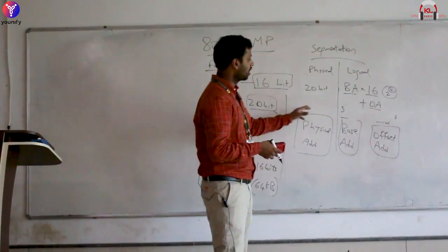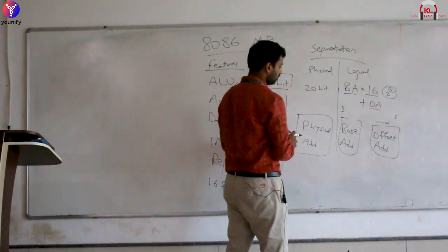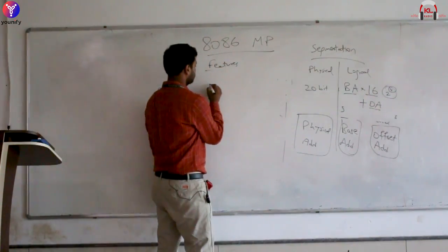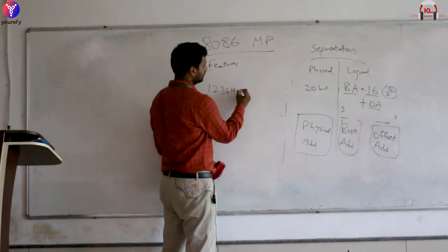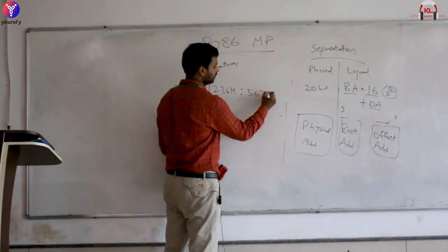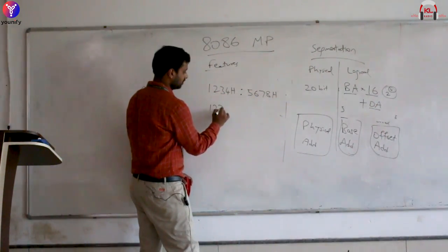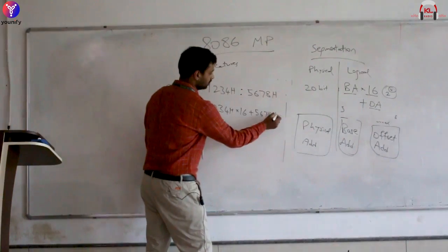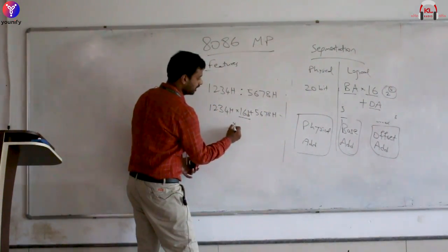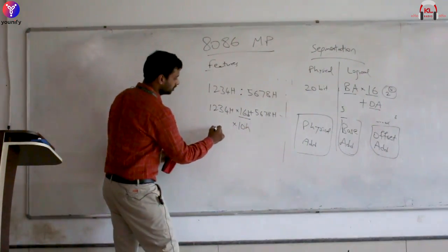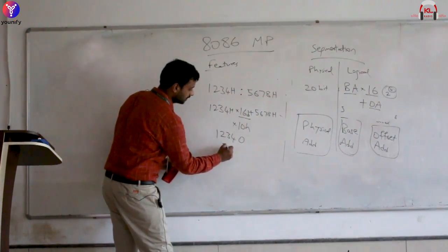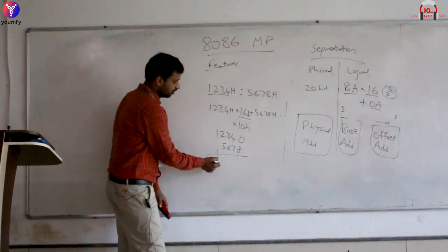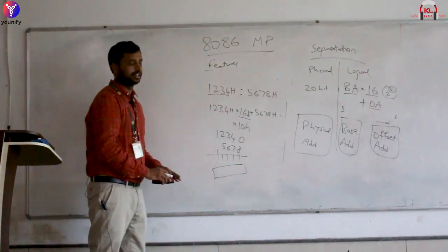This formula is encountered throughout the course with problems to solve. For example, if the base address is 1234h and the offset address is 5678h, the physical address is calculated as: 1234h × 10h + 5678h. Multiplying by 10h shifts the base left by one hex digit, giving 12340h. Adding the offset: 12340h + 5678h = 179B8h. In practice, just append a zero to the base address and add the offset to get the 20-bit physical address.